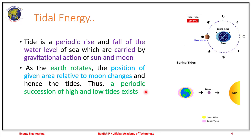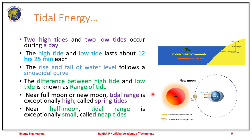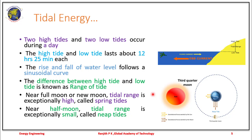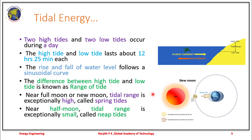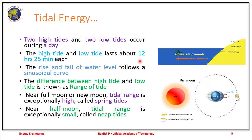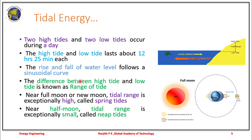A periodic succession of both high tides and low tides exists in nature. In a typical day, tides occur in the form of two high tides and two low tides, lasting roughly about 12 hours and 25 minutes each. The rise and fall of the water level usually follows a sinusoidal curve.